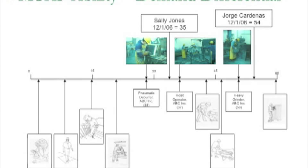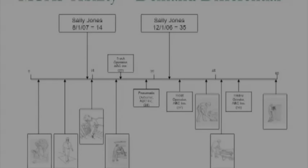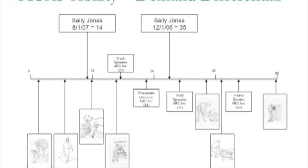These are their ability scores compared with the demand scores of various tasks in the plant. The employer is able to use those ability scores to assign Sally and Jorge to jobs in which they have reserve capacity. Unfortunately, a few months later, Sally is injured. She begins rehabilitation with an MTAP ability score of 14. Subsequent MTAP scores can be used to track her progress to see whether or not she can receive alternate employment before she's ready for her usual and customary job.